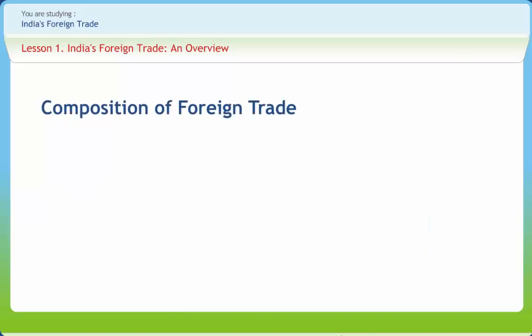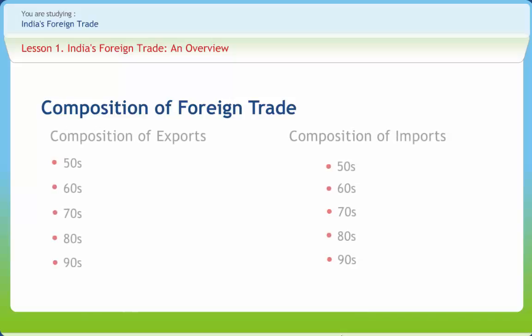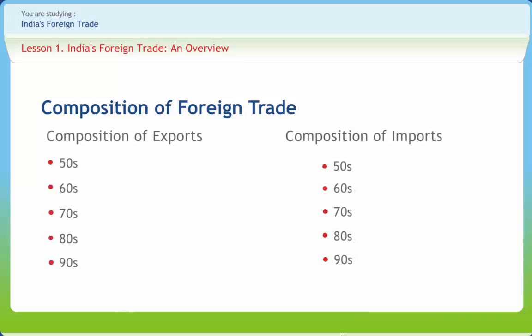There has been substantial change in the composition of foreign trade over the years, and several new items have been entered in the export basket. India's exports were largely agro-based during the 1950s. Three principal traditional items — textiles, jute manufactures, and tea — accounted for nearly 54% of the country's exports.